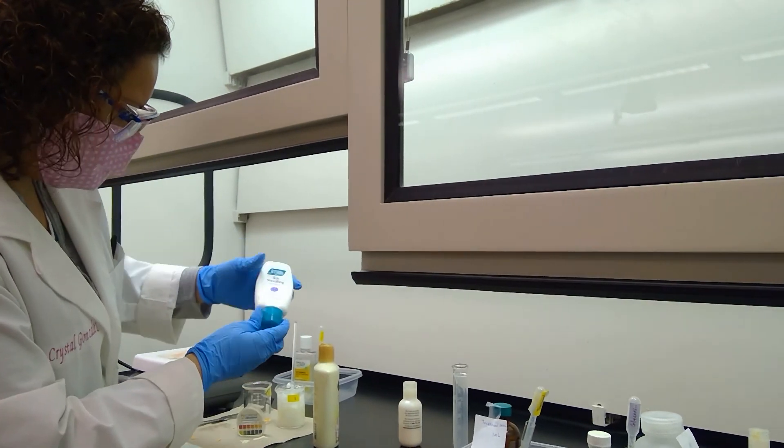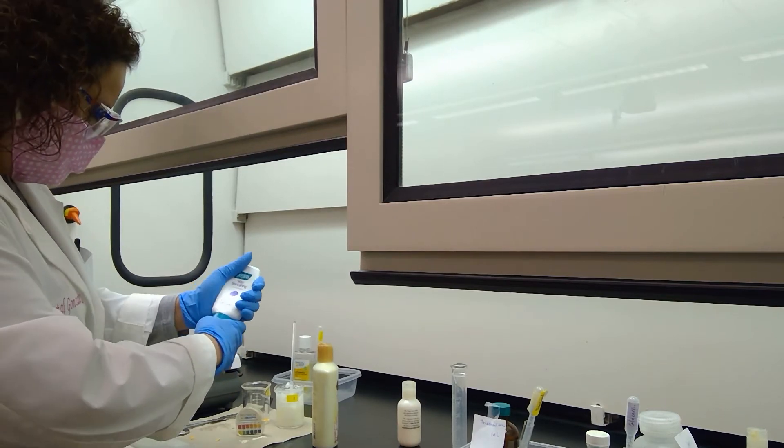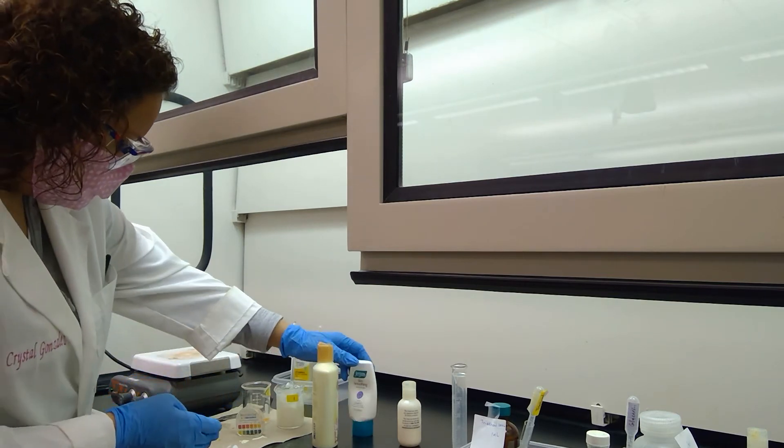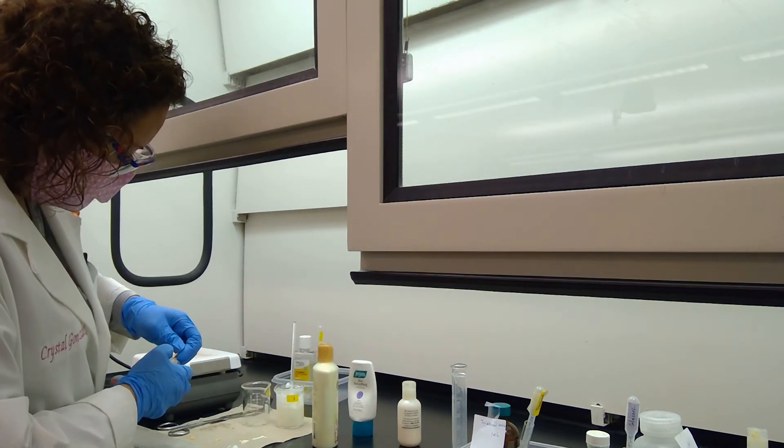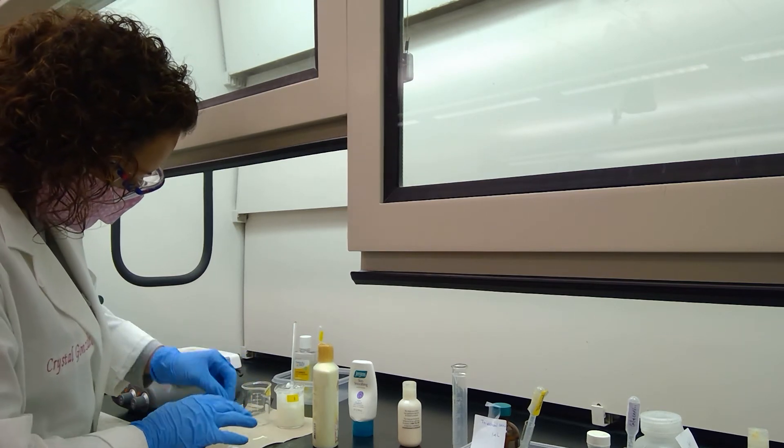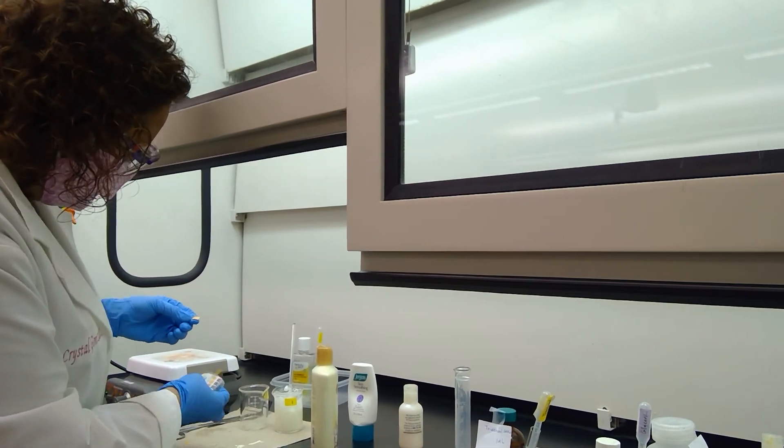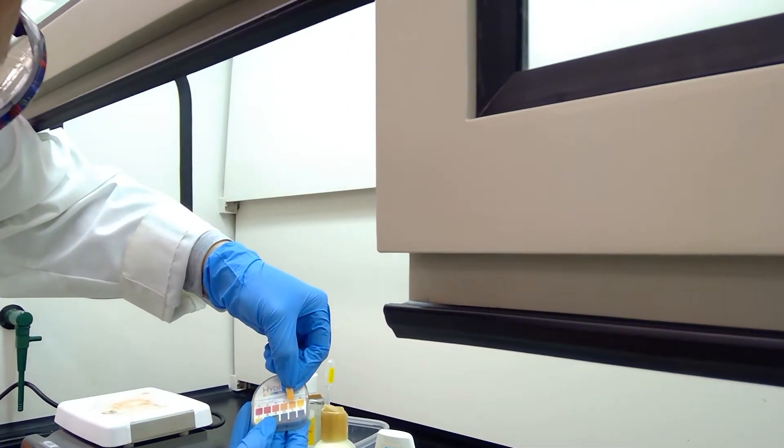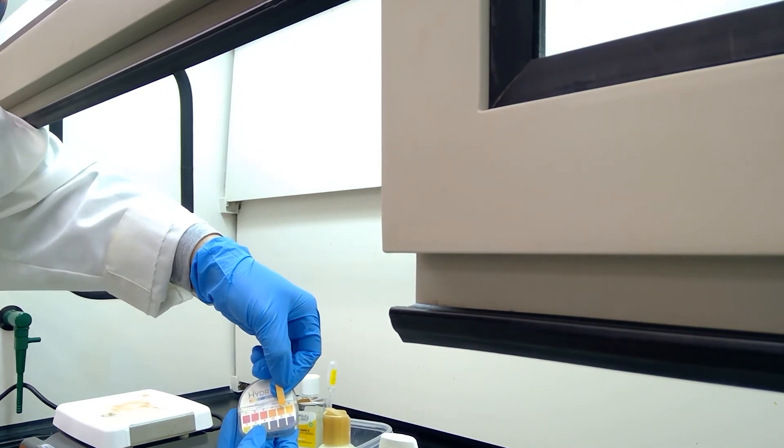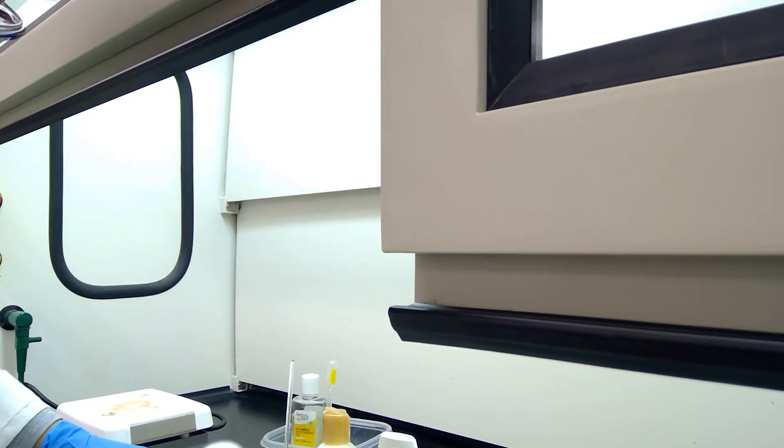Next up, we're going to take a look at this Jergens Skin Soothing lotion. I'm going to dip my pH paper into the lotion, wipe it off, and see what value we get. Making sure I'm using a clean part of my glove, we get a pH of about 5, so probably somewhere between 5 and 6 for this Jergens lotion.